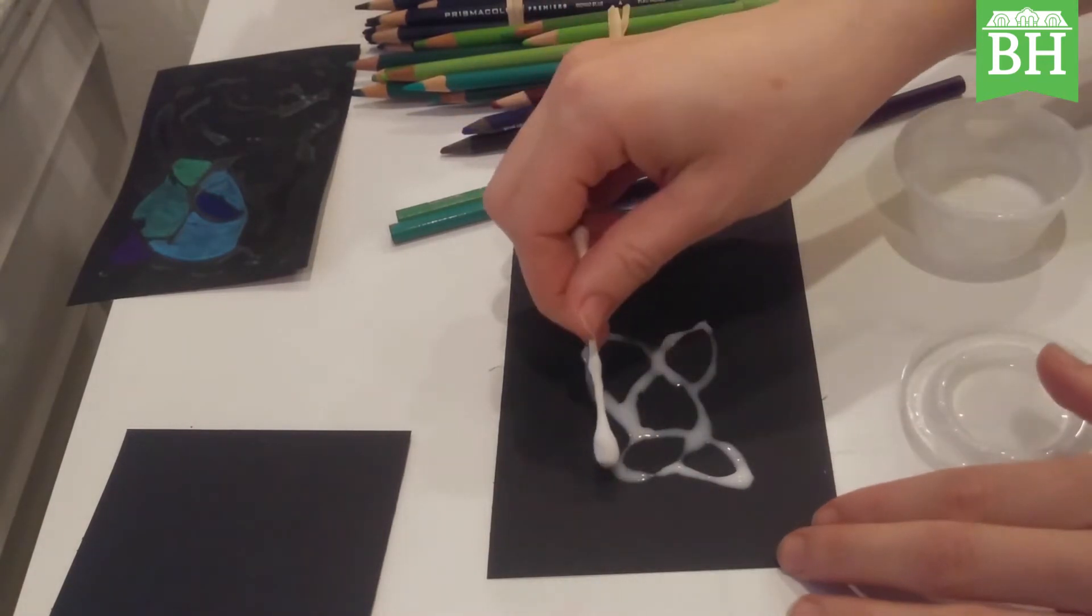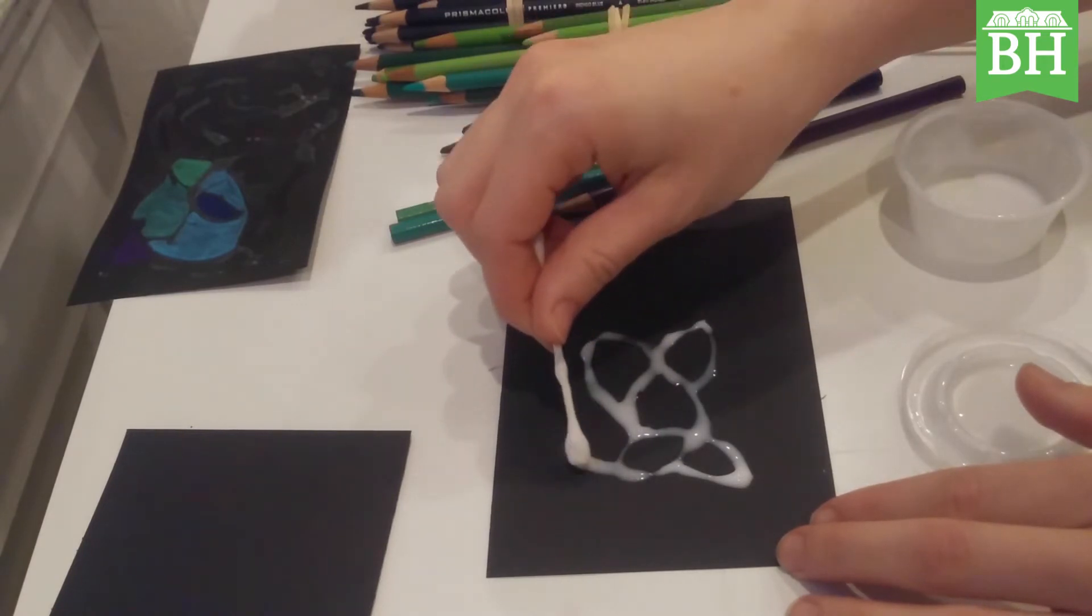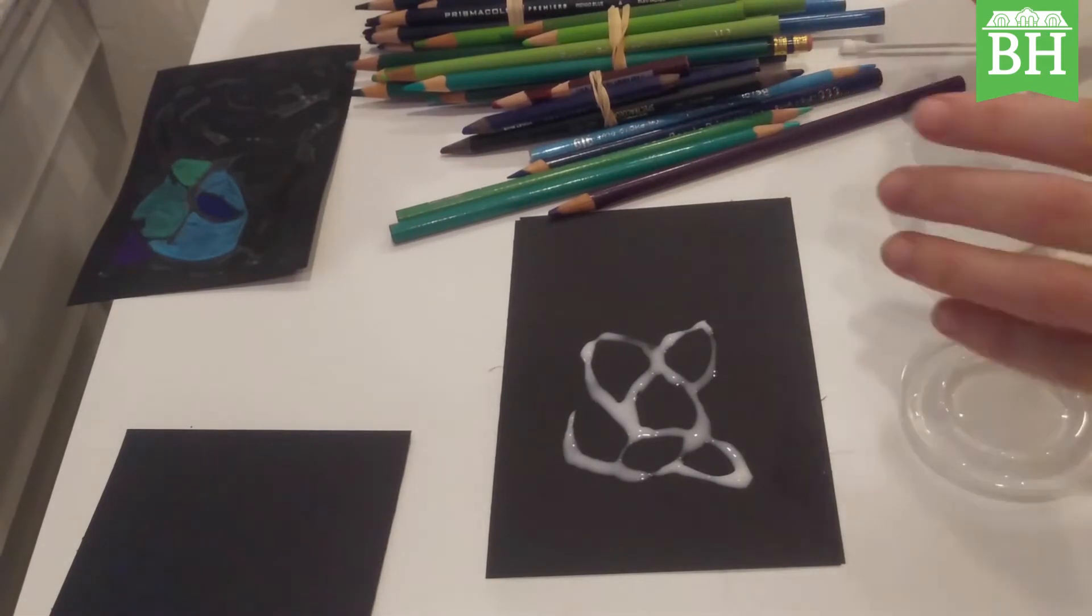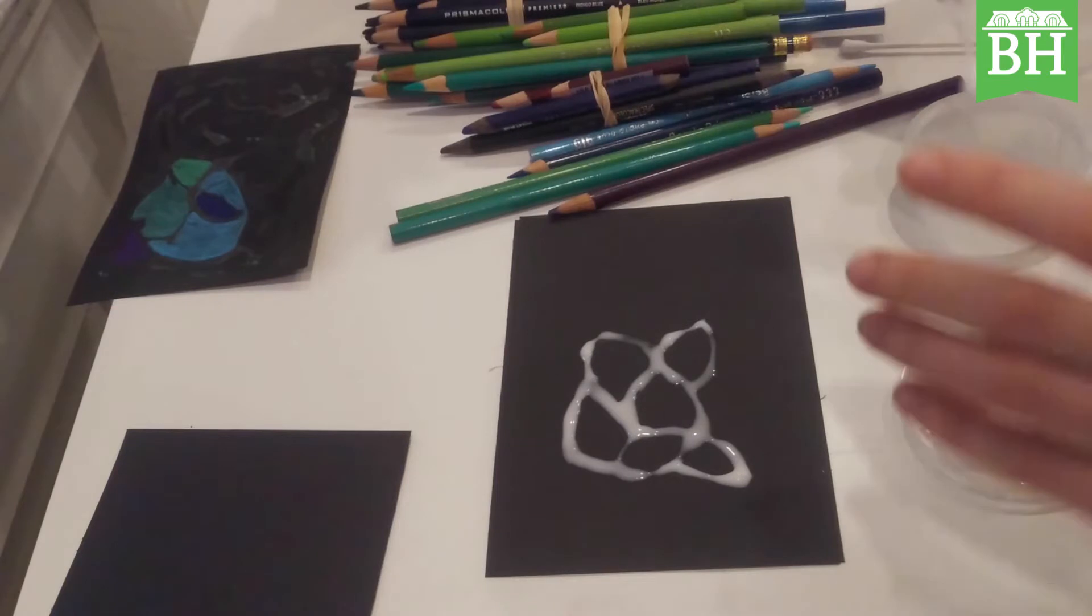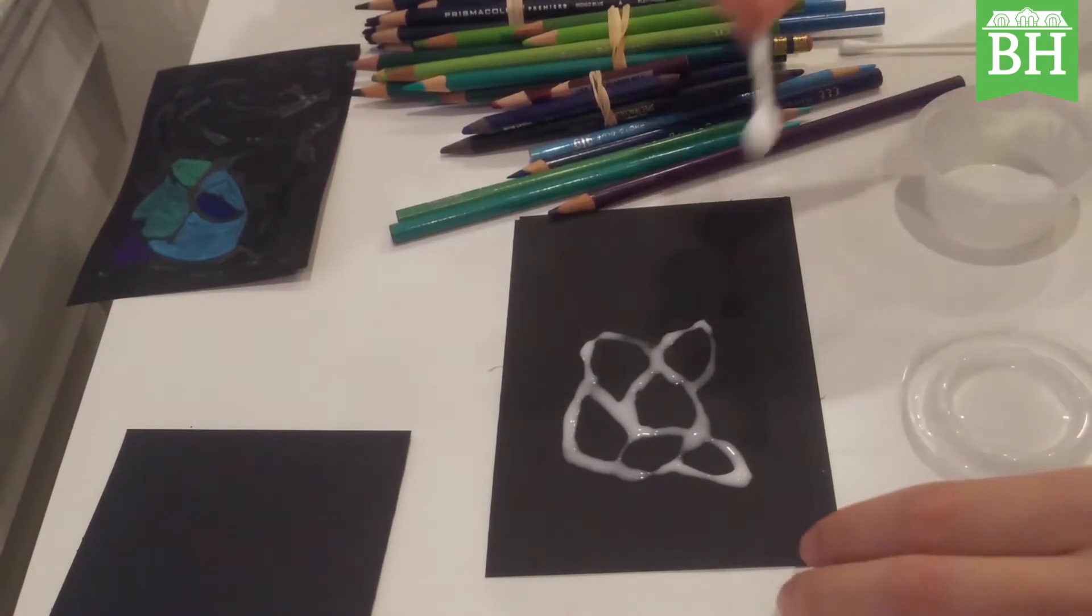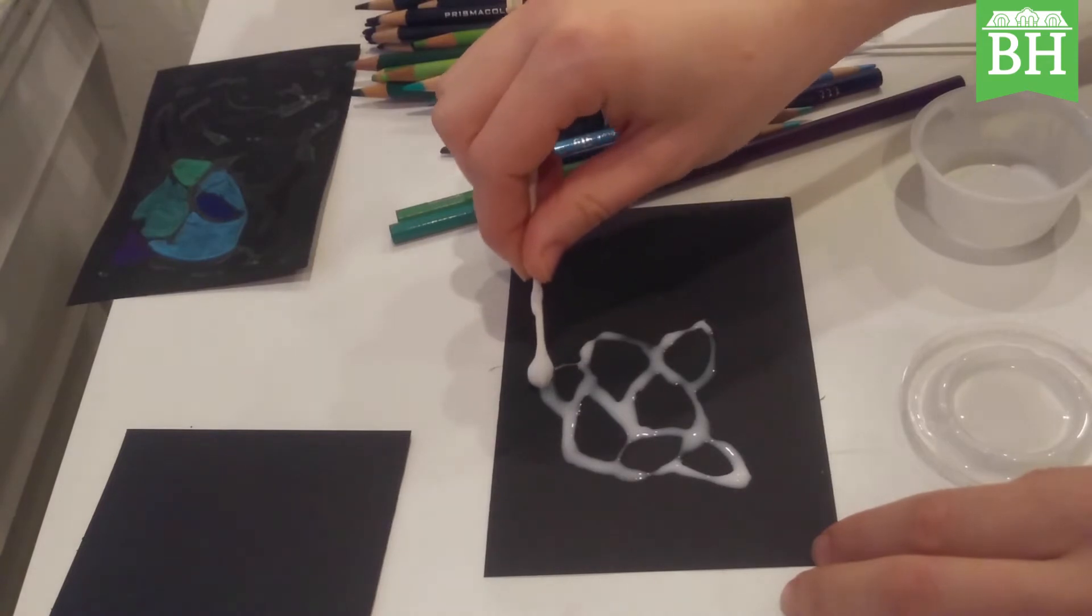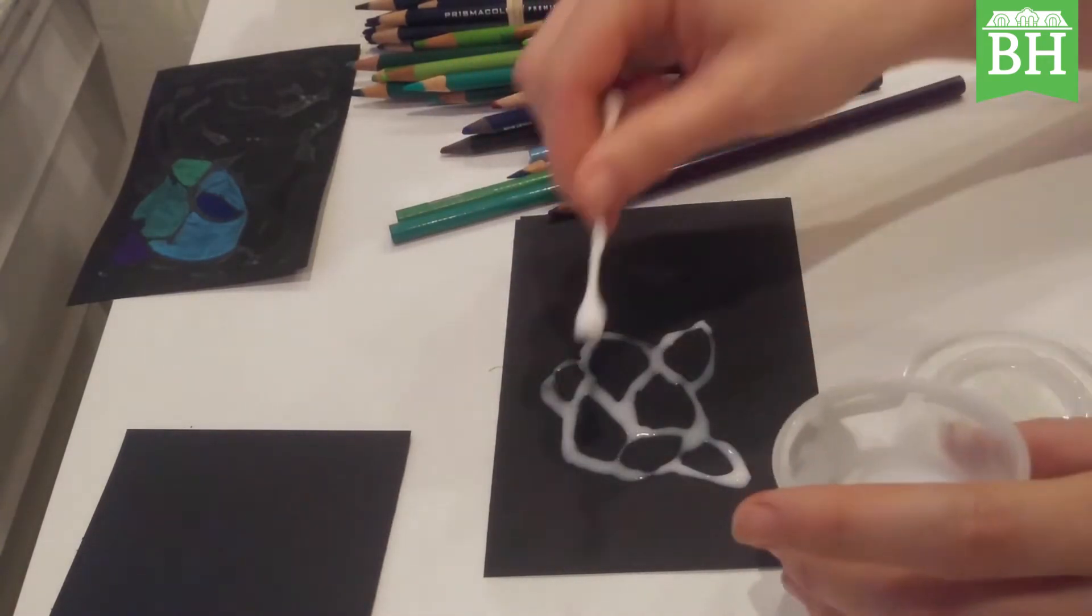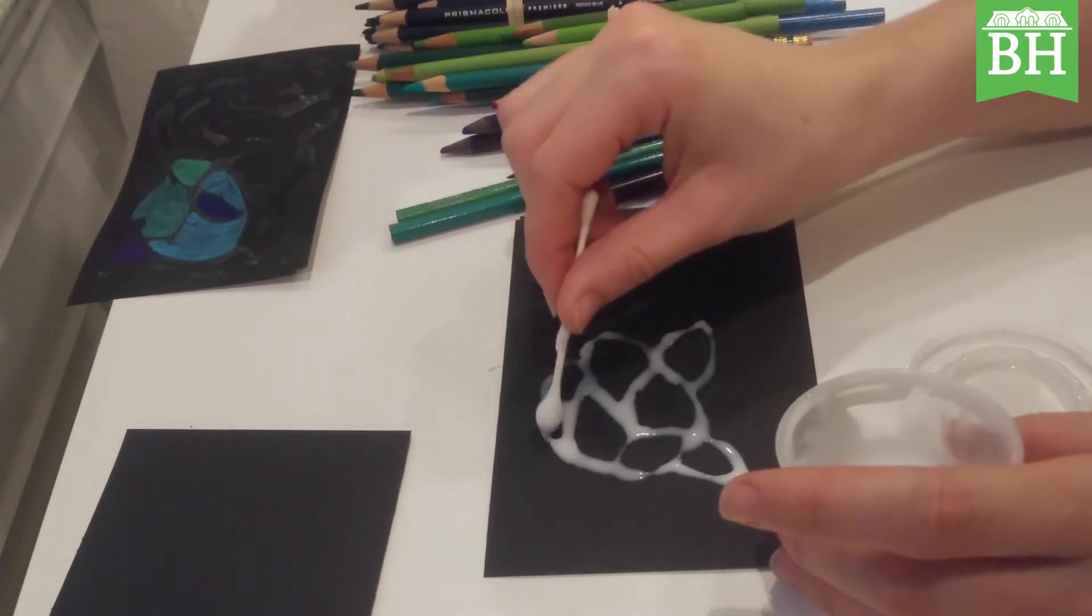And then you're going to color in with pencil between those shapes you've created. The glue is going to dry clear and you're going to be left with some black lines that resist being colored by the pencils.